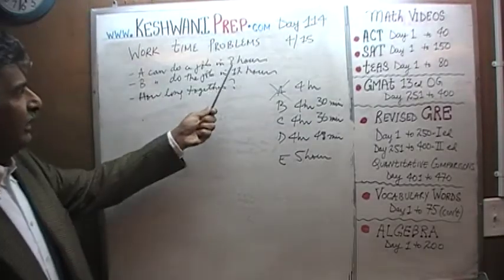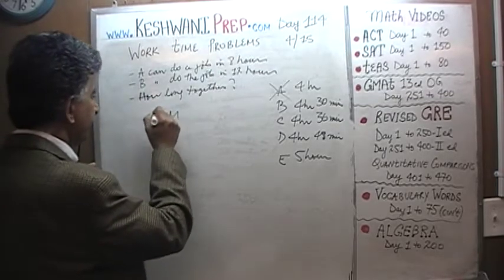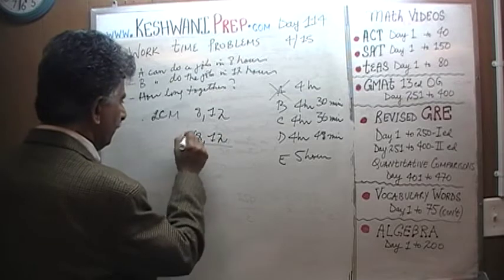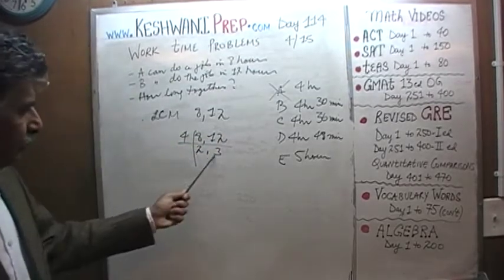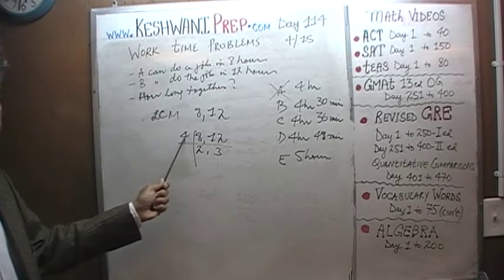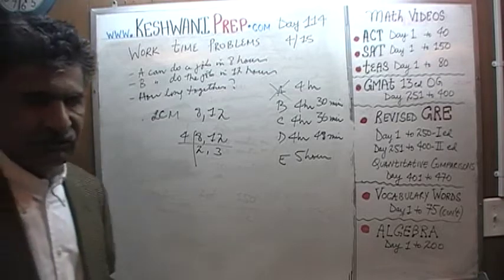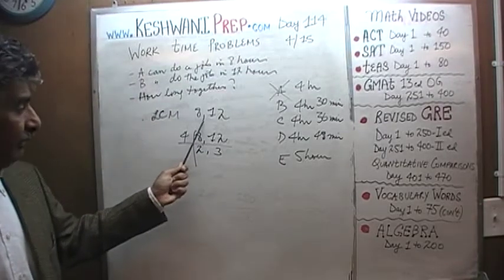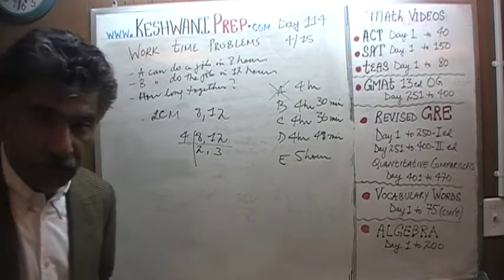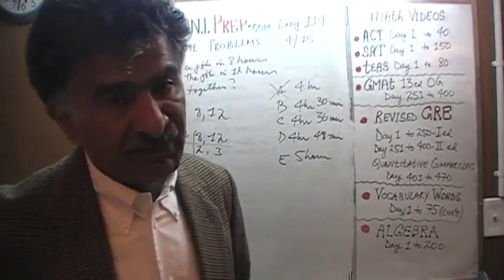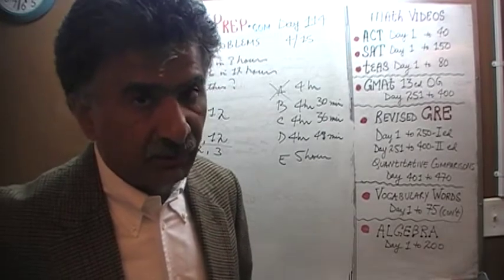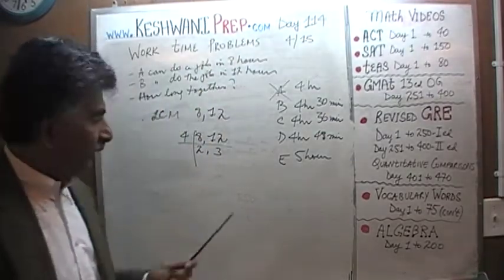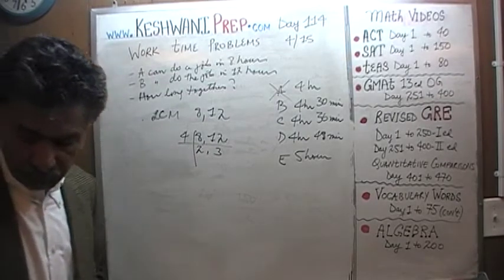Let's find the LCM of 8 and 12. Both divide by 4, giving 2 and 3. 2 times 3 is 6, and 6 times 4 is 24. The least common multiple is 24 — the smallest number evenly divisible by both 8 and 12. That's our magic number here.